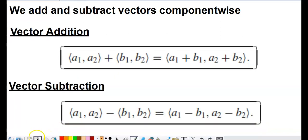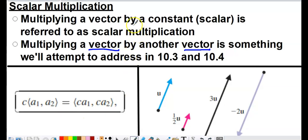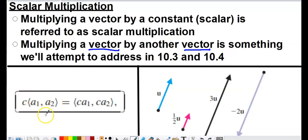The next calculation is known as scalar multiplication. When you perform scalar multiplication, it's important to recognize what the term scalar refers to. A scalar is not a vector — it's a constant, just a number. It doesn't have a magnitude and direction; it just has a magnitude. When you multiply vector A, with X component A1 and Y component A2, by scalar C, all you do is multiply each component by the scalar. Some people describe this as distributing the scalar into the components.